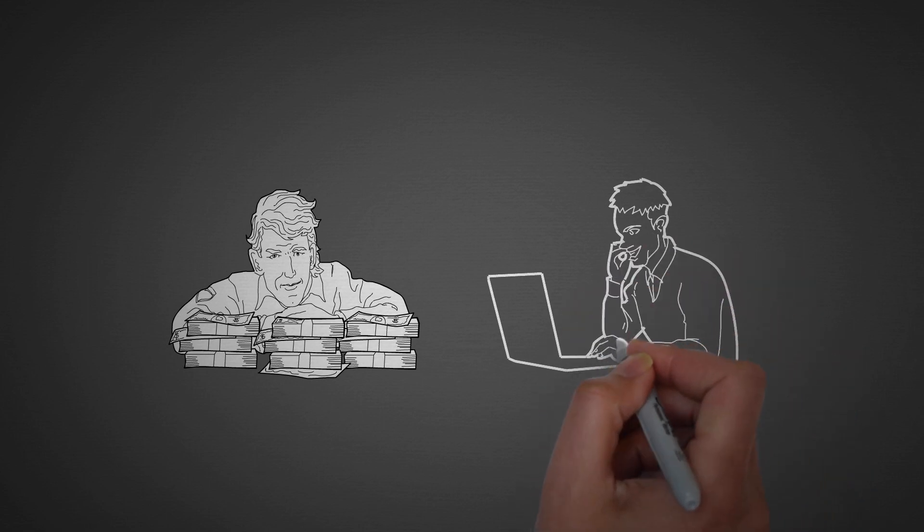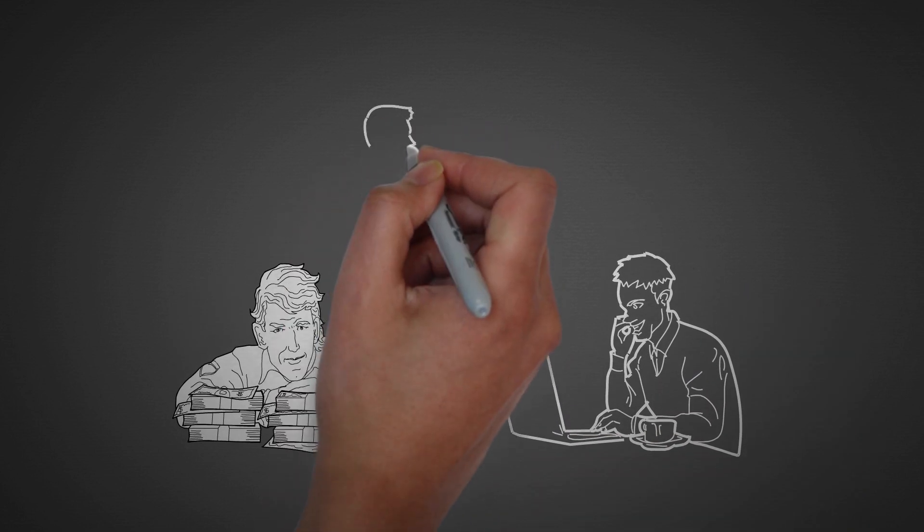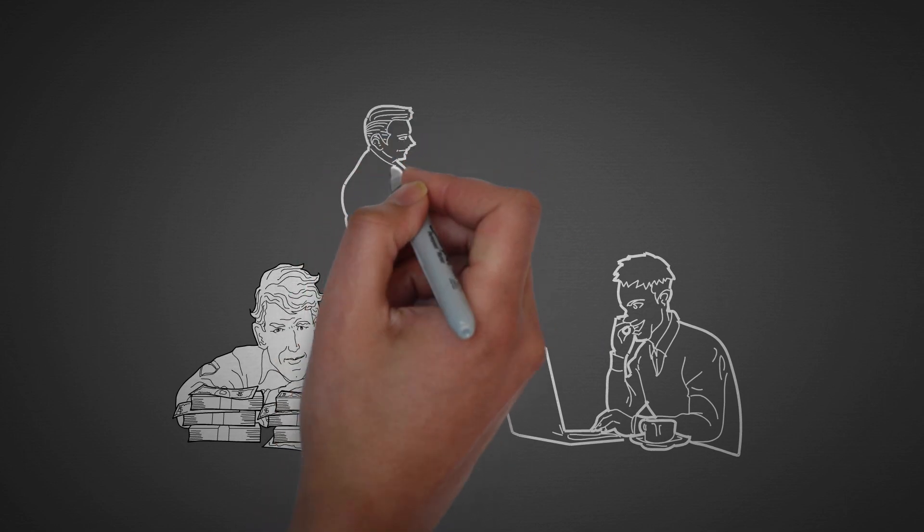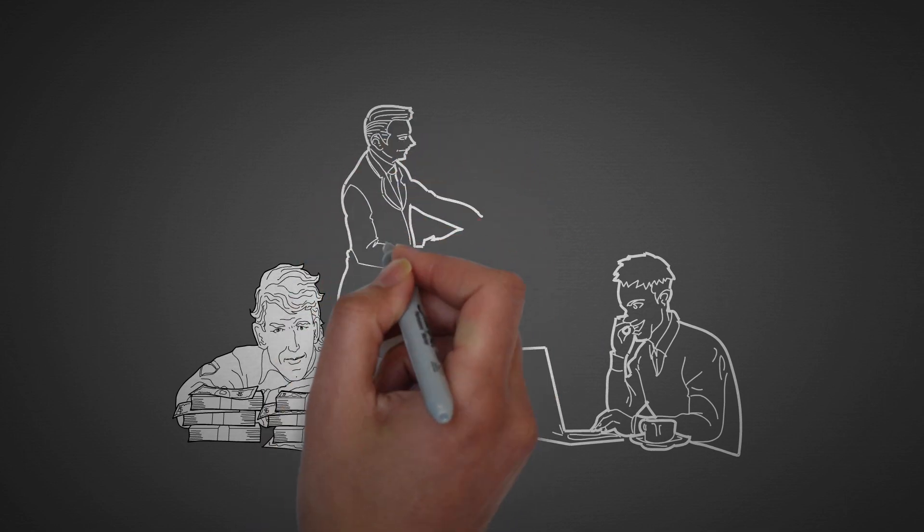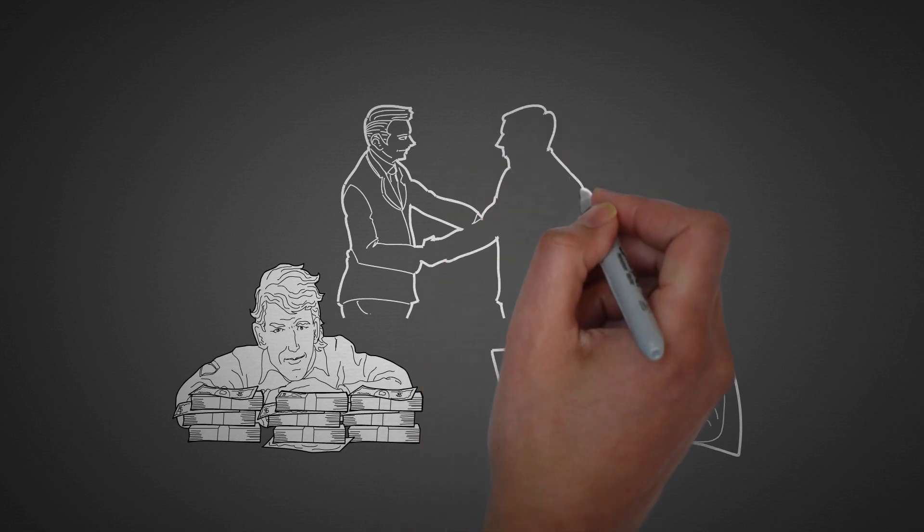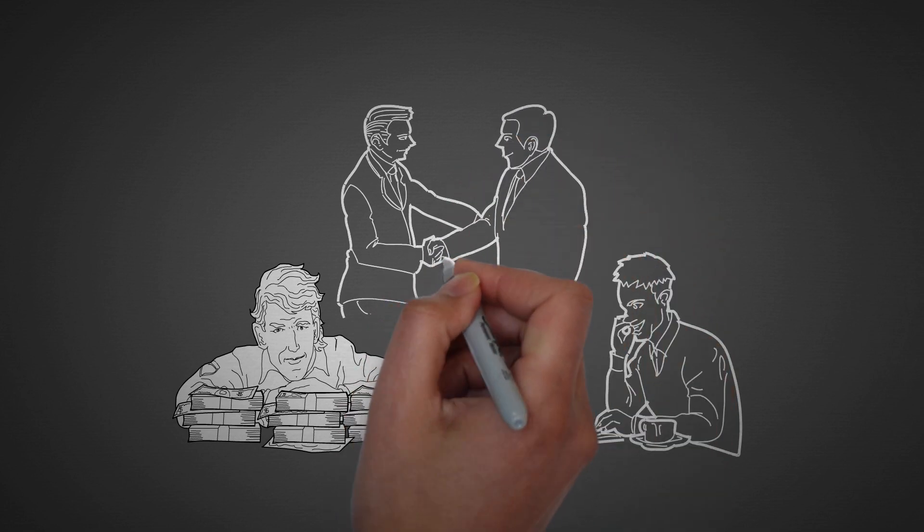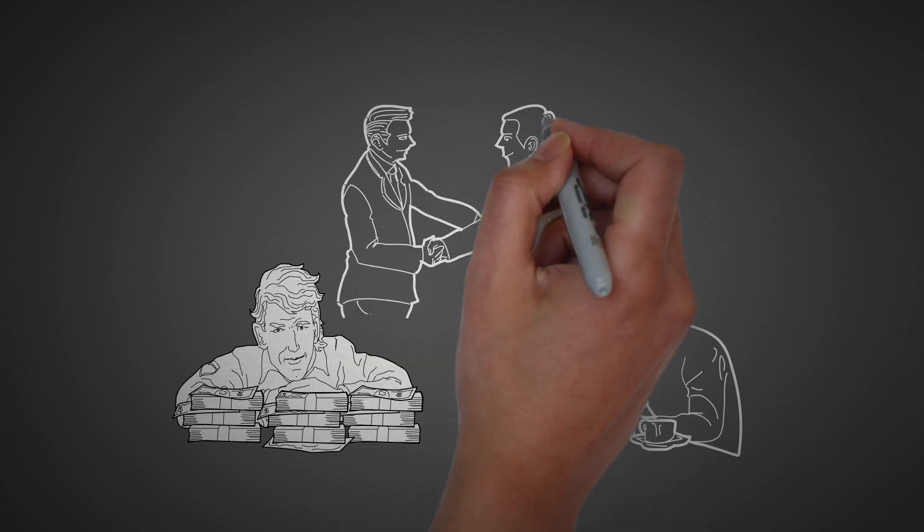When it comes down to the nitty-gritty generic and unbranded options stand tall as budget-friendly alternatives. Think about everyday heroes like store brand medications, pantry staples like rice and beans, trusty cleaning supplies, and humble paper products. These champions come with a lower price tag and pack the same punch as their flashy name-brand counterparts.